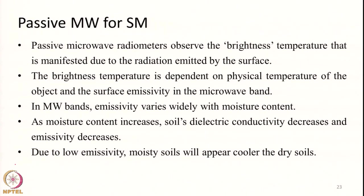First we will start discussing passive microwave radiometry for soil moisture estimation. Passive microwave radiometers measure brightness temperature — that is what we get from the data. The brightness temperature depends on the actual temperature of the object and the emissivity of the object, so Tb equals emissivity times T. In microwave wavelengths there is a direct relationship. Whenever a soil is wet, the emissivity will go down. For dry soils, emissivity will be higher. When the soil gets wet, the emissivity goes down, so the brightness temperature of wet soils will be lower than that of dry soils. Observing this difference is helpful in retrieval of soil moisture from passive microwave radiometry.